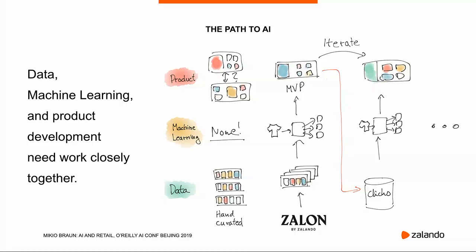The next step was to generalize these outfits over the whole assortment, but we still didn't have any click data. Normally you use click data to figure out what to learn from customer behavior. But what we had was data from Zalon, which is a part of Zalando, where you actually talk with a human stylist who puts outfits together and sends them to you. If you like them, you keep them, otherwise you send them back. We had a few years of that — a few hundred thousand outfits — and we used that to compute similarities between outfits as an MVP.